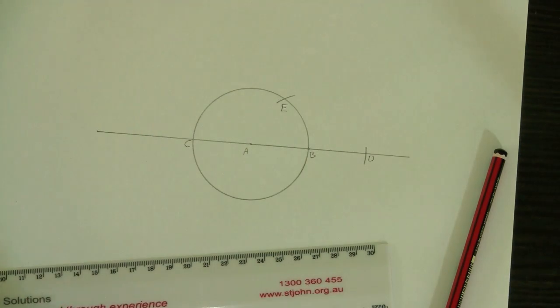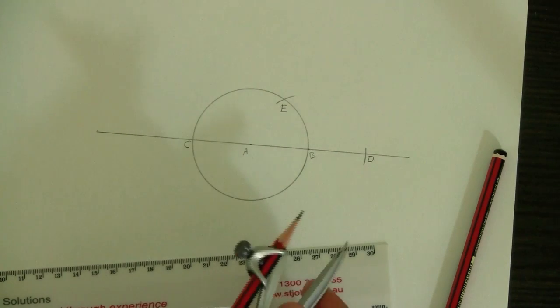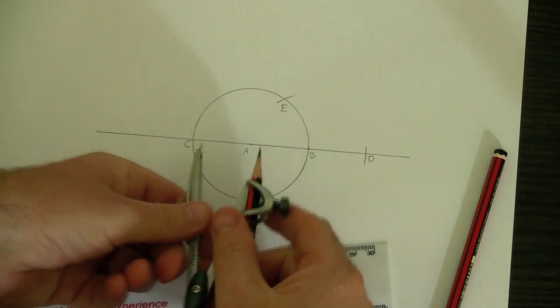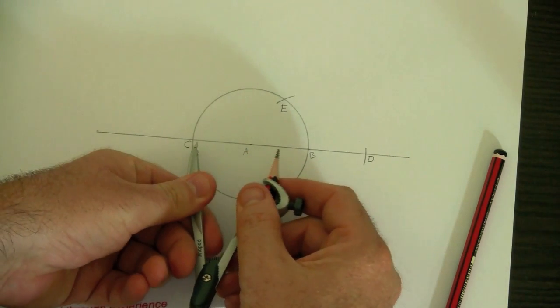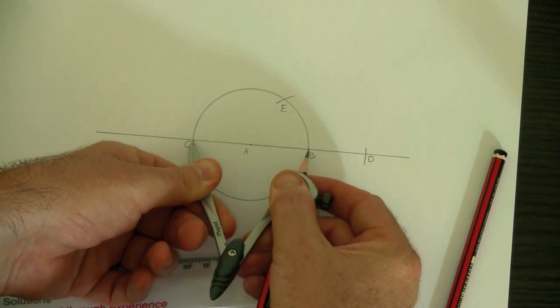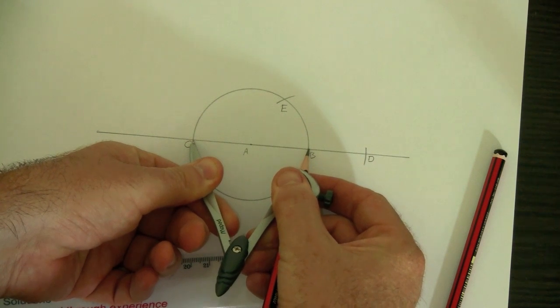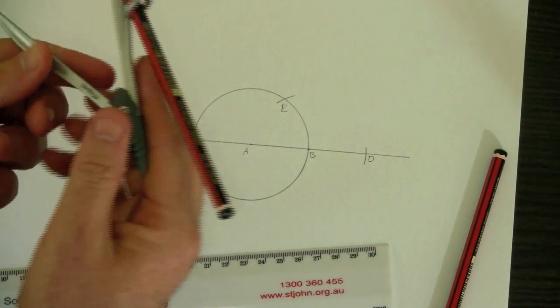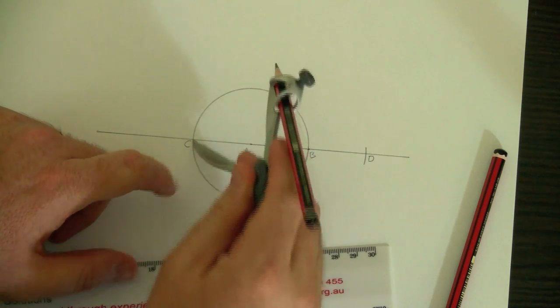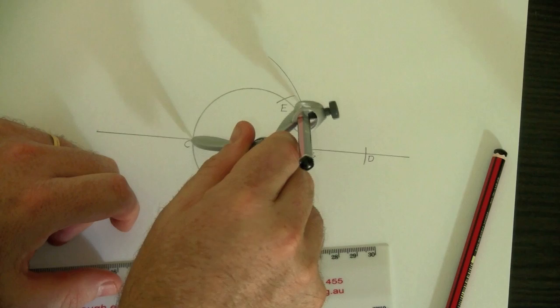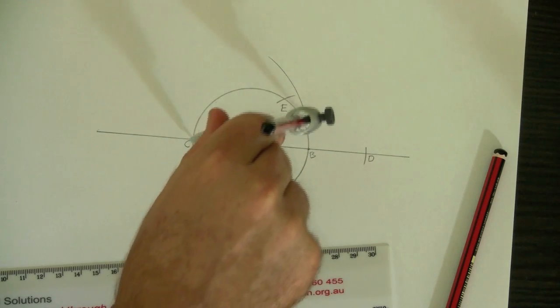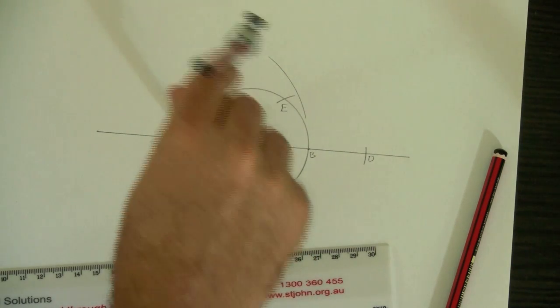Next, if I set the compass radius to the distance from C to B, that's twice the radius of the original circle, or the diameter of the original circle. Then, I can draw an arc out here. So there it is. Okay, so this is the arc of a circle with radius two.